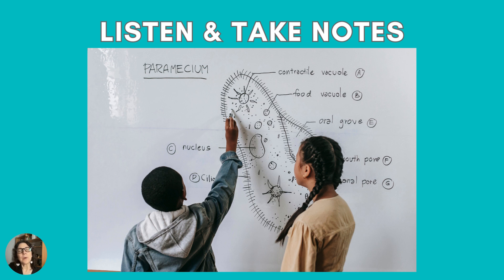But what kind of living things does biology cover? Biology includes the smallest living things — even things that we cannot see, like bacteria or cells. Other times, biology studies larger things, like insects, plants, and animals. And let's not forget humans.